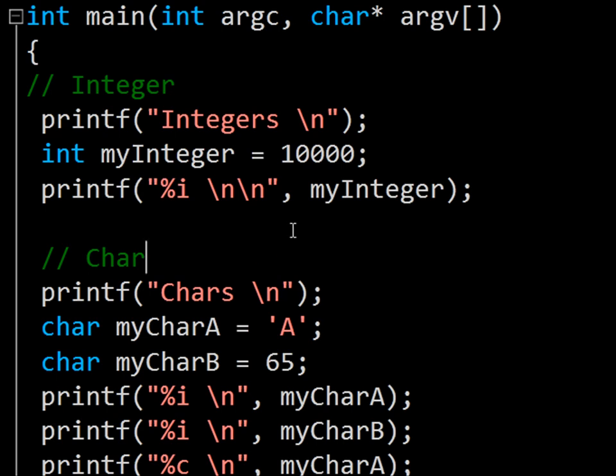You can use any name for your variable consisting of letters, numbers and underscores, although you cannot start with a number. The second part of the line is the variable initialisation, where we set my integer to store the number ten thousand.